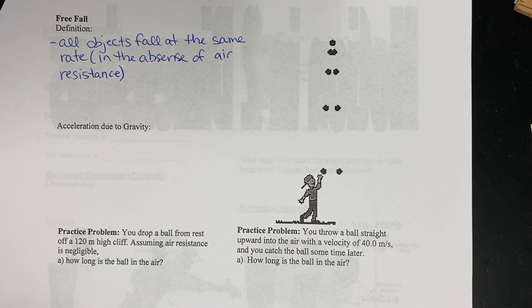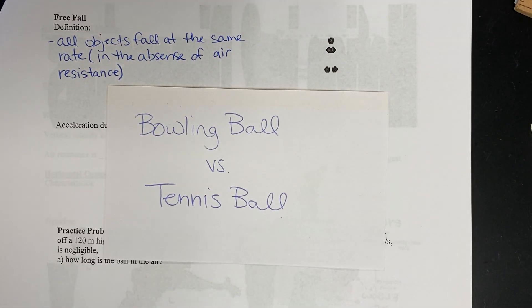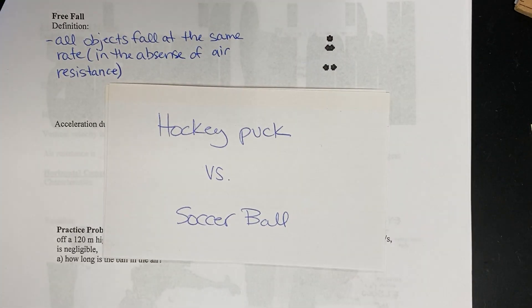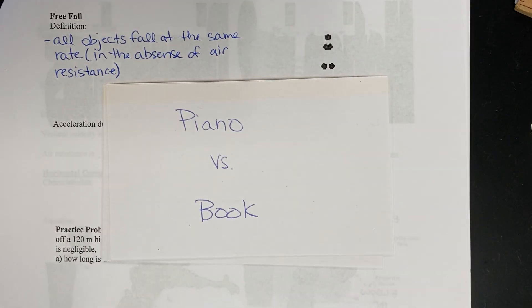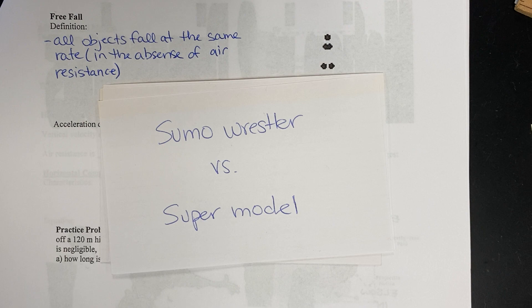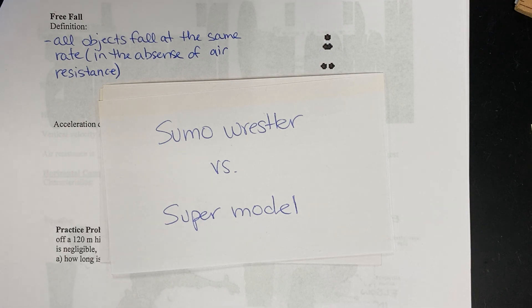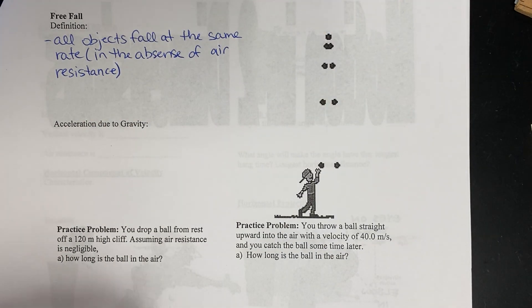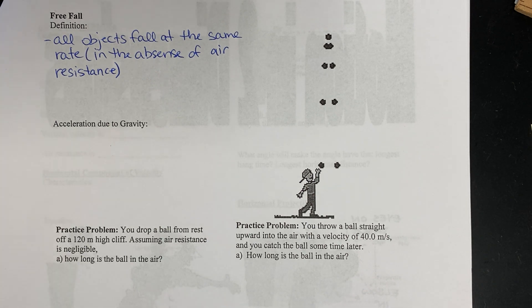So you mean to tell me that a bowling ball and tennis ball when dropped from the same height in the absence of air resistance will hit the ground at the same time? Yes, they will. How about a hockey puck and a soccer ball? Yes. How about a piano and a textbook? Yes, those two. How about a sumo wrestler and a supermodel? Yes. No matter what the mass is, all objects when dropped from the same height will hit the ground at the same time in the absence of air resistance.